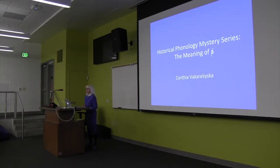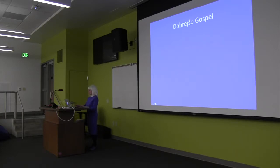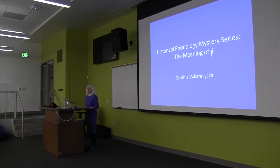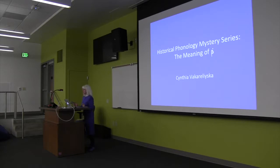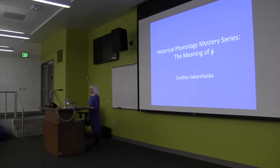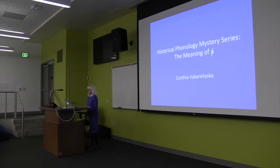Thank you so much for being here. This presentation is going to demonstrate some of the issues that historical linguists need to deal with when using data from written sources. A particular issue I'm going to look at is what linguistic meaning, if any, does the dot have over the old Cyrillic letter called rci, which represents the consonant R in Slavic.